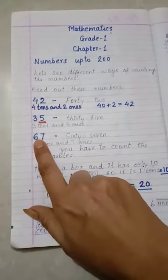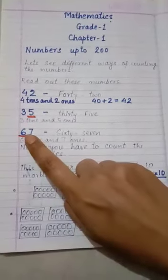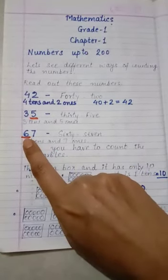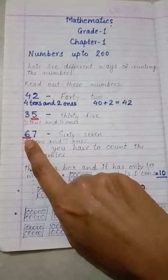If we come to number 67 and ask what is the place value of 6? 6 is at the tens place. So, the place value of 6 is 60.